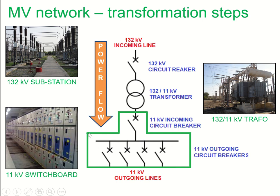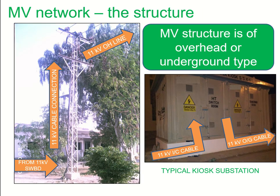When the power leaves the 11 kV outgoing circuit breaker of the switchboard, there are two ways of distribution: either using overhead distribution lines or using underground cables. First, we take the example of overhead lines — cable from the 11 kV switchboard reaches the 11 kV pole structure and is terminated into the overhead conductor for further distribution. In the case of distribution using underground cables, we can take the example of a kiosk substation, where power enters and leaves using underground cables.